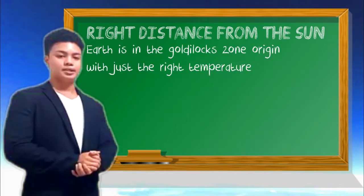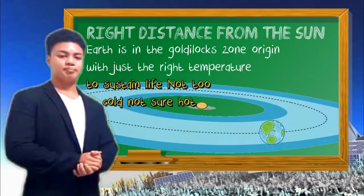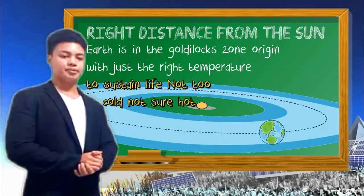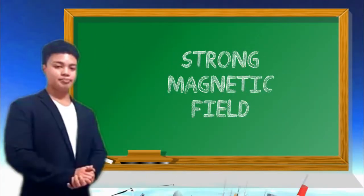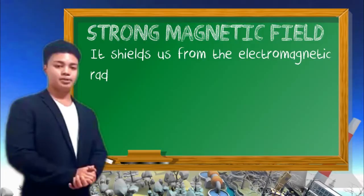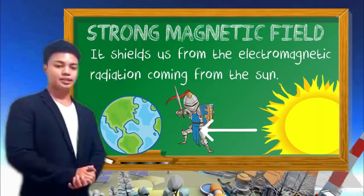Distance from the Sun. Earth is in a Goldilocks zone with just the right temperature to sustain life, not too cold, not too hot. Strong magnetic field. It shields us from electromagnetic radiation coming from the Sun. The magnetic field deflects the radiation that may destroy the ozone layer.